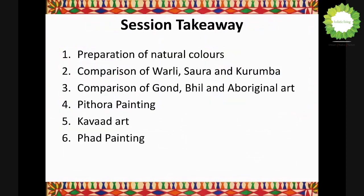We will be learning about the preparation of natural colors, both permanent and temporary, because the moment we talk about ancient art forms, the first question that comes to mind is how these colors were made, whether they are permanent or temporary, and what natural resources were used. We will also be discussing a comparison of Warli, Saura, and Kurumba — three different tribes with certain similarities and differences.